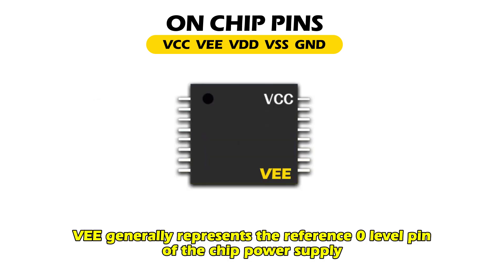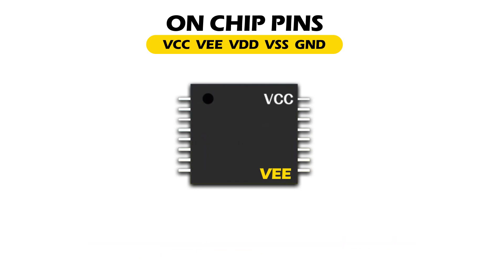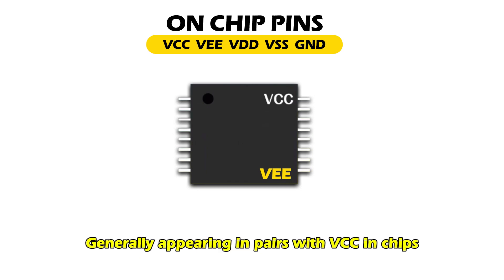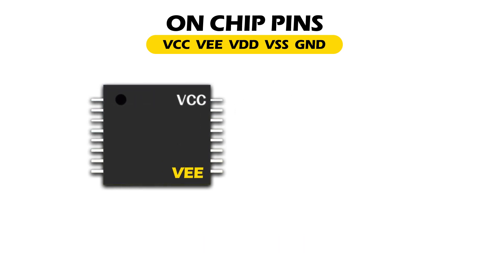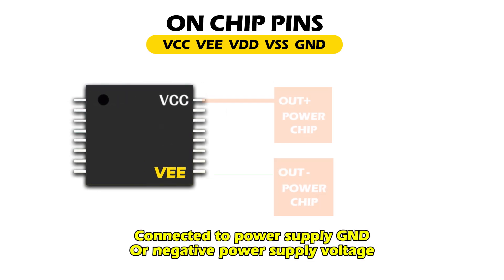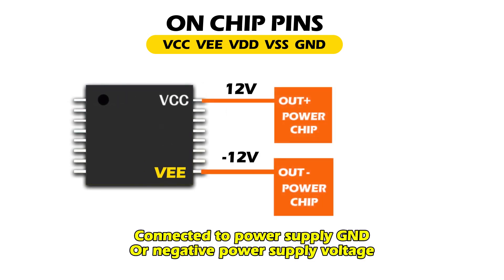DEE generally represents the reference ground level pin of the chip power supply, or the negative power pin of the analog chip, generally appearing in pairs with VCC in chips. Connected to power supply GND or negative power supply voltage.